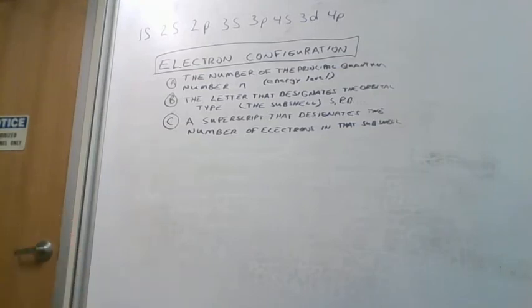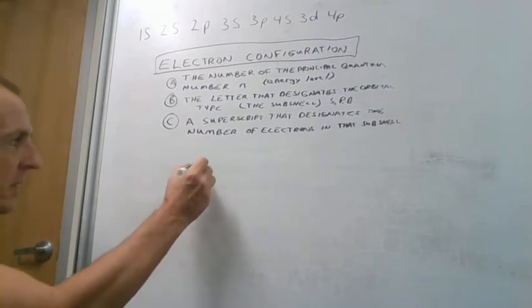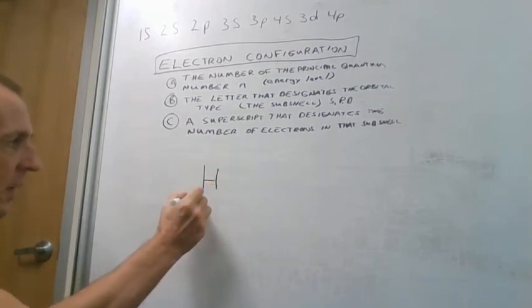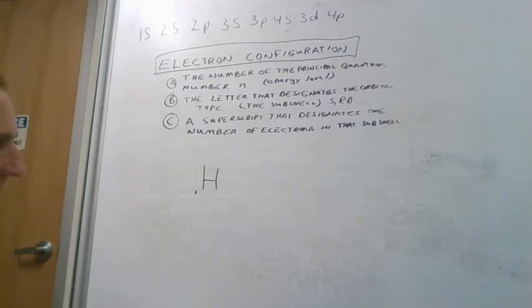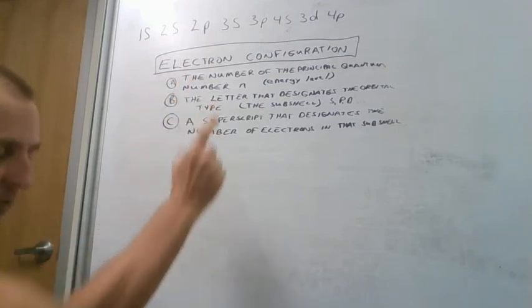And the way we do this shorthand is say we take our first element, hydrogen. Hydrogen is atomic number one, so all it has is one proton and one electron.